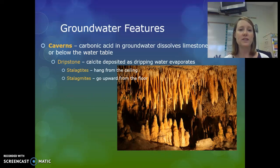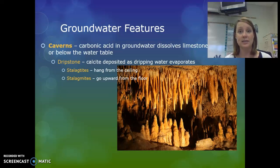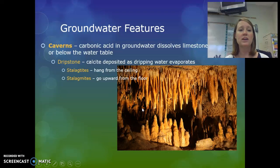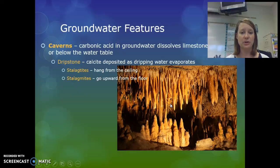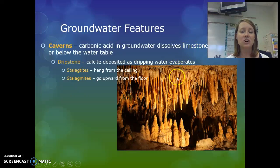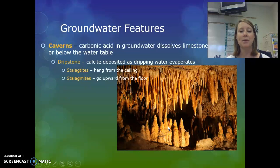If there is a lot of carbonic acid in groundwater in an area containing limestone, the groundwater can dissolve the limestone. As groundwater drips through a cavern, it creates dripstone because calcite dissolved in the water gets left behind. The dripstone that hangs from the ceiling is called stalactites, and the dripstone that forms on the floor of the cave is called stalagmites.